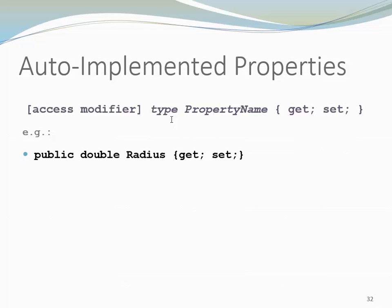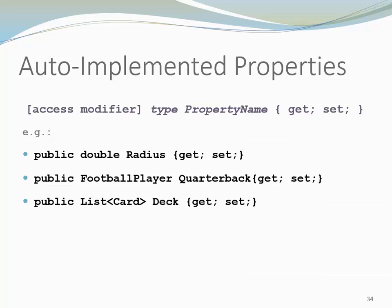You can see access modifier, type, property name, and then in curly braces we specify both get and set, or maybe just the get. So the example we had first was the radius. We could also use our own type. Let's say I have a football player type and I'm creating a quarterback of type football player. I could also have a generic type, like a list of cards. This is my deck.